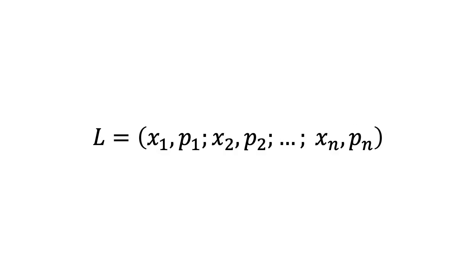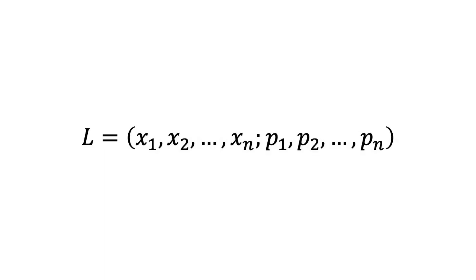You may also see gambles represented with the outcome and probability in a different order, such as L equals x1, p1; x2, p2; through to xn, pn. Or L equals x1, x2, through to xn; p1, p2, through to pn.